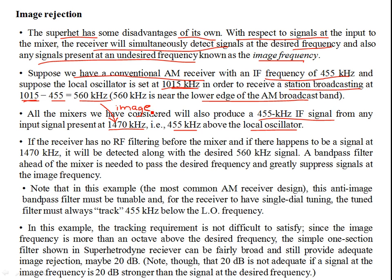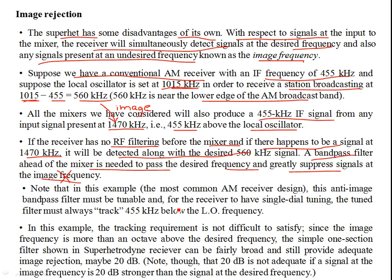At the audio output, you're going to hear something else. So if the receiver has no RF filtering before the mixer and there happens to be a signal at 1470, it will be detected along with the desired 560. A bandpass filter ahead of the mixer is needed to pass the desired frequency and suppress the signal at the image frequency. Note that in this AM receiver design, this anti-image bandpass filter must be tunable, so that the receiver can have single-dial tuning, and this tuning filter must always track 455 kilohertz below the local oscillator frequency.